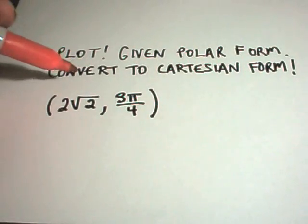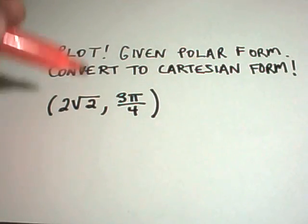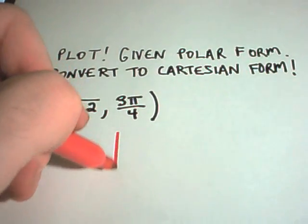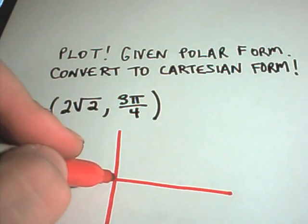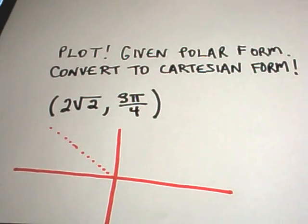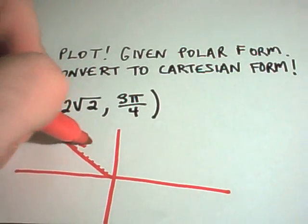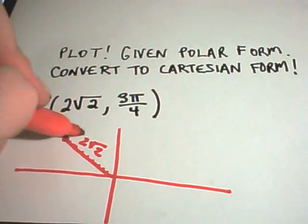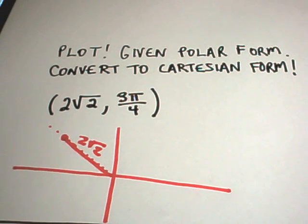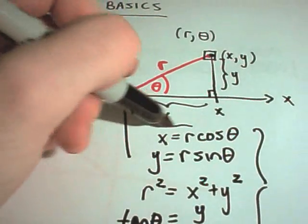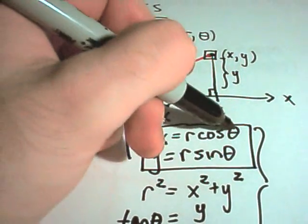Alright, so a couple more here. So in the first one, suppose we're given polar form and we're going to graph it and then we're going to convert it to x and y coordinates. So again, it says I find the angle 3 pi over 4. This is the angle 3 pi over 4. And then it says I go at a distance of 2 square root of 2.